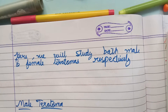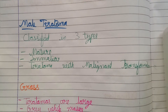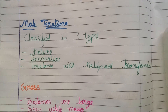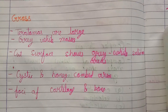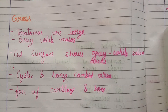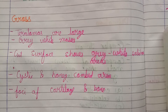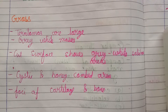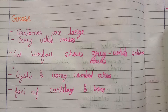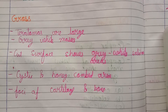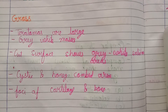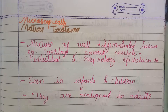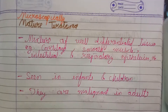We will study both male and female teratomas respectively. Male teratoma is classified into three types: mature, immature, and teratoma with malignant transformation. Grossly, male teratomas are large gray-white masses. The cut surface shows gray-white solid areas, cystic and honeycomb areas, and foci of cartilage and bone are also seen.